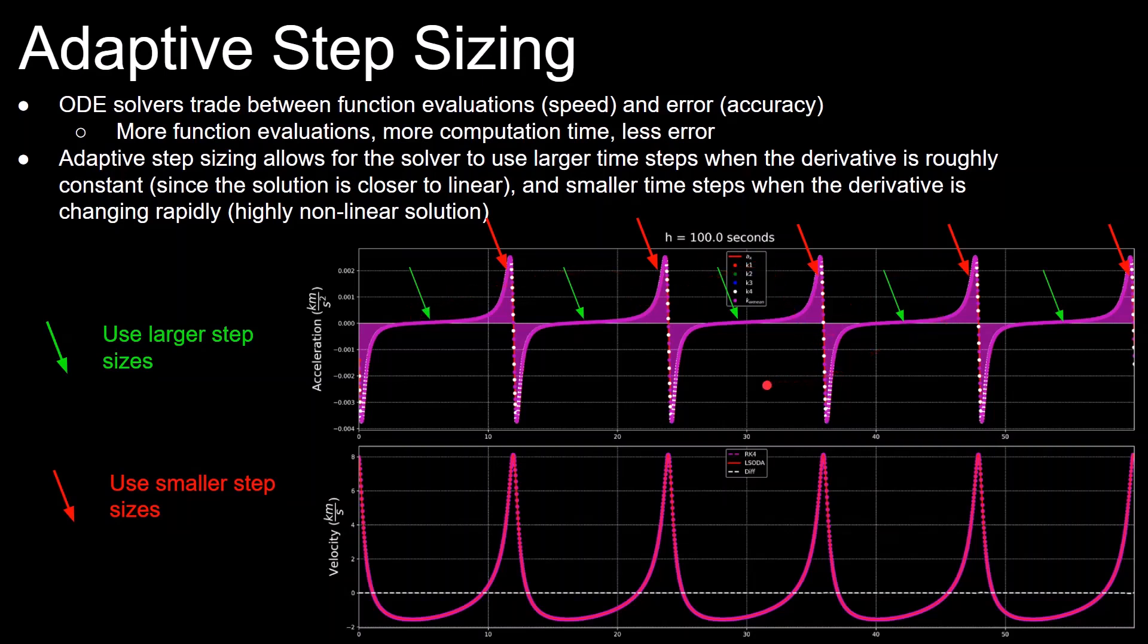And on the other hand, when the derivative is changing rapidly, the solver should use smaller time steps in order to maintain accuracy. And in this orbit, the solver would use smaller time steps where the red arrows are.